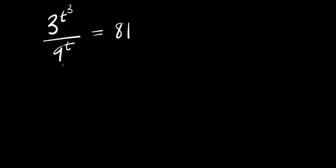Hello, how do you solve this exponential problem? 3 to the power of 2 to the power of 3, divided by 9 to the power of 2, and this equals 81.